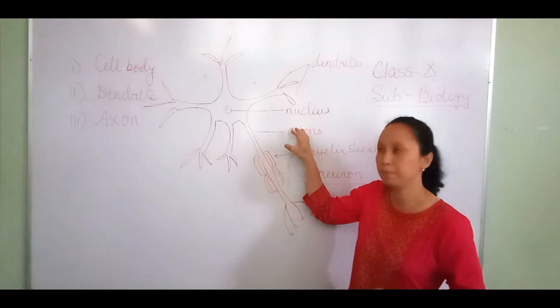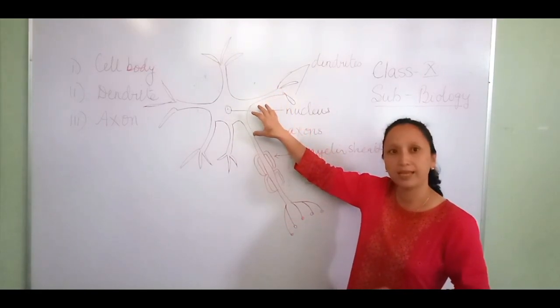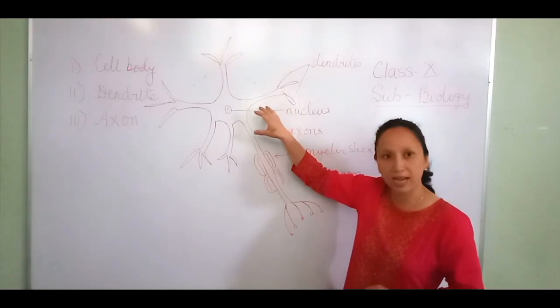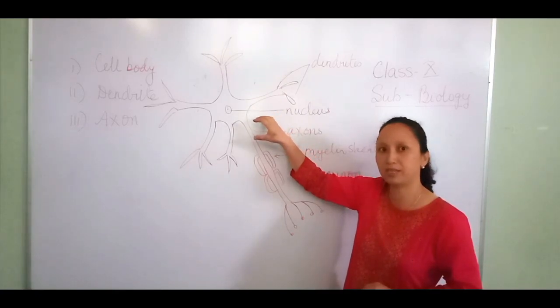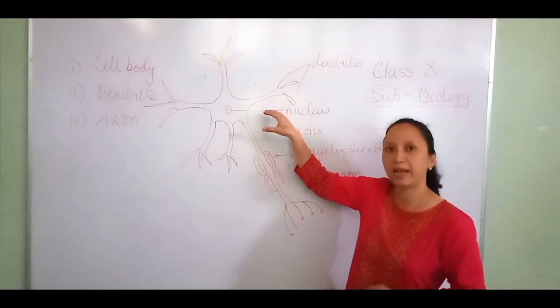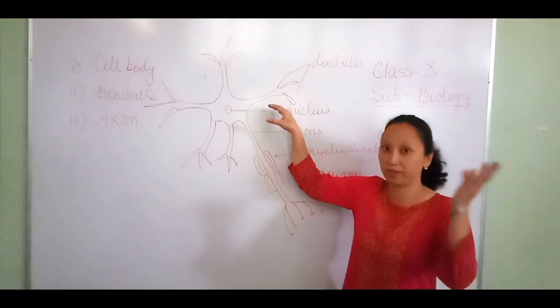Let me explain the diagram. The cell body is the main part of the neuron, also called the soma. This cell body accepts nerve impulses from the dendrite and transfers them to the axons.